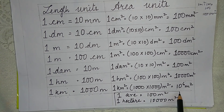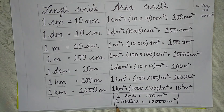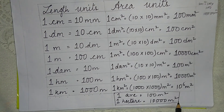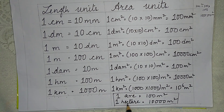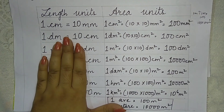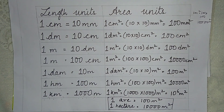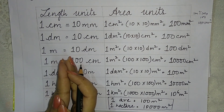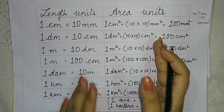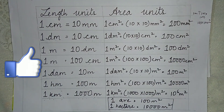Remember: 1 are equals 100 m² and 1 hectare equals 10,000 m². To do these conversions, just learn the length unit conversions and then square them — your area units will convert very easily. I hope you have understood. Thank you for watching.